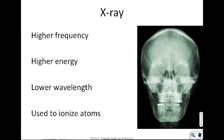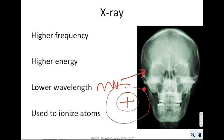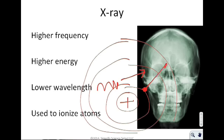X-rays have an even higher frequency, higher energy, and lower wavelength. Because the wavelength is so small, it penetrates the skin — that's why we can use X-rays to produce images of bones inside your body. In science, X-rays are used to ionize atoms: visible and UV light move electrons to higher levels, but X-rays have such high energy that they give the electron enough energy to leave the atom entirely — becoming a free electron.